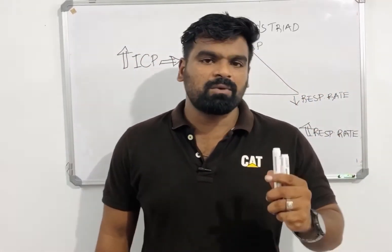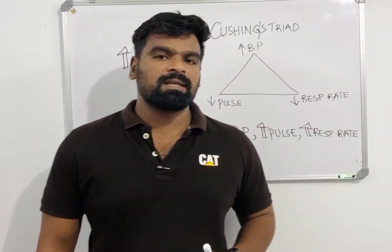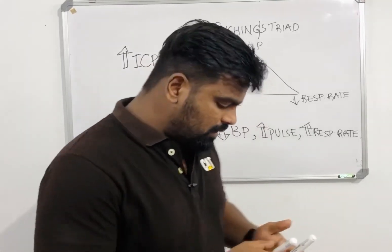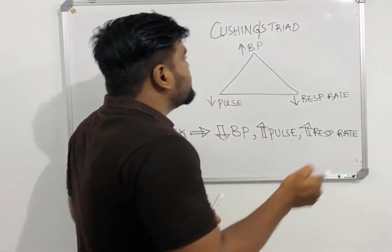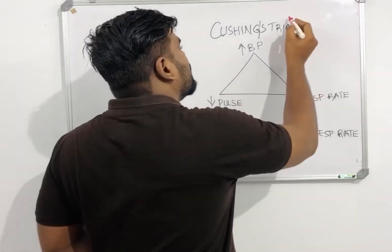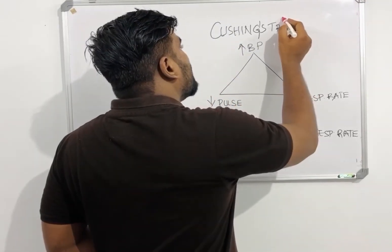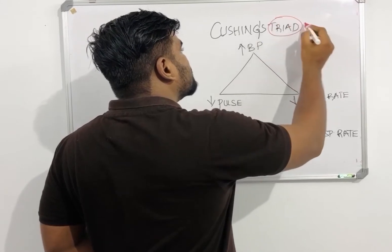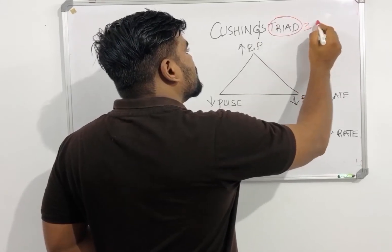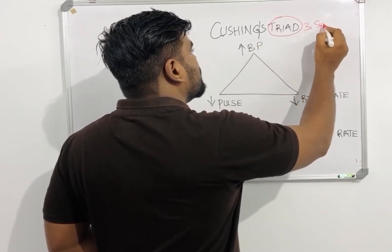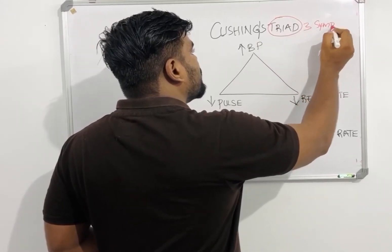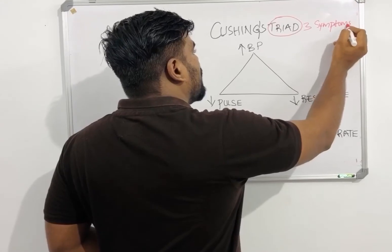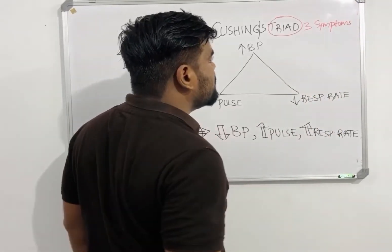So what is Cushing's Triad? From the name itself, you know that 'Triad' means there are three symptoms. Triad always refers to three symptoms.